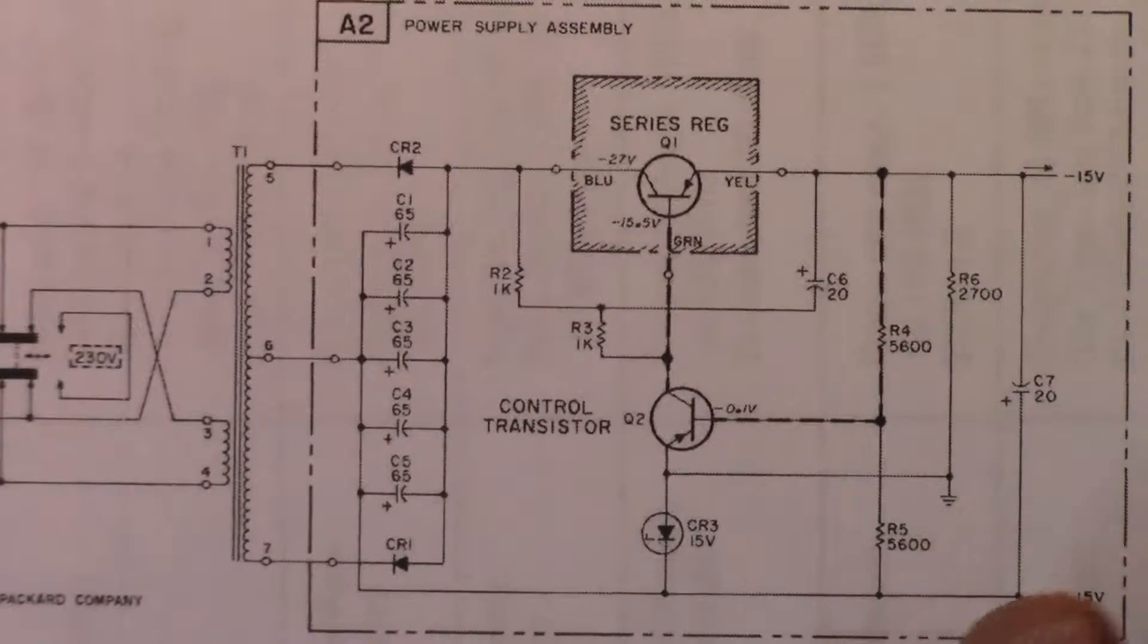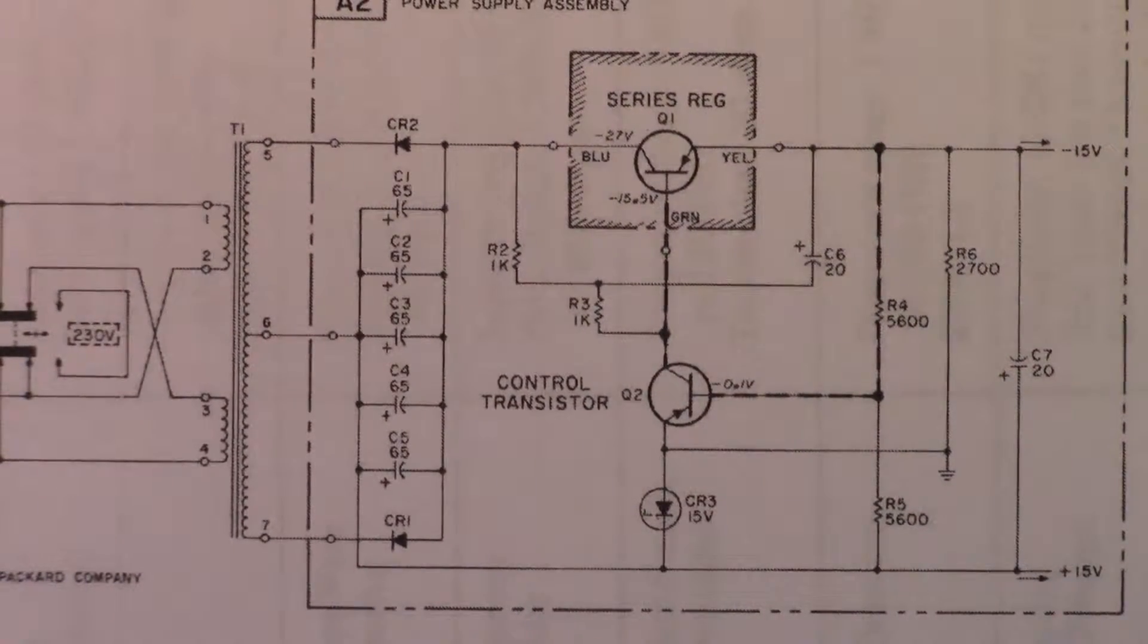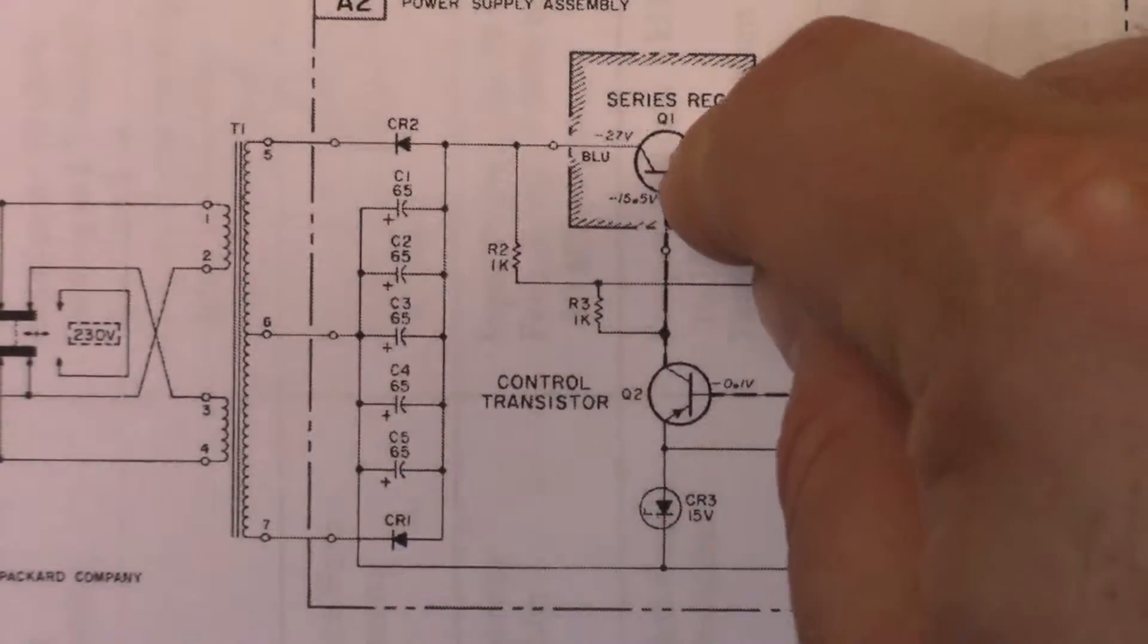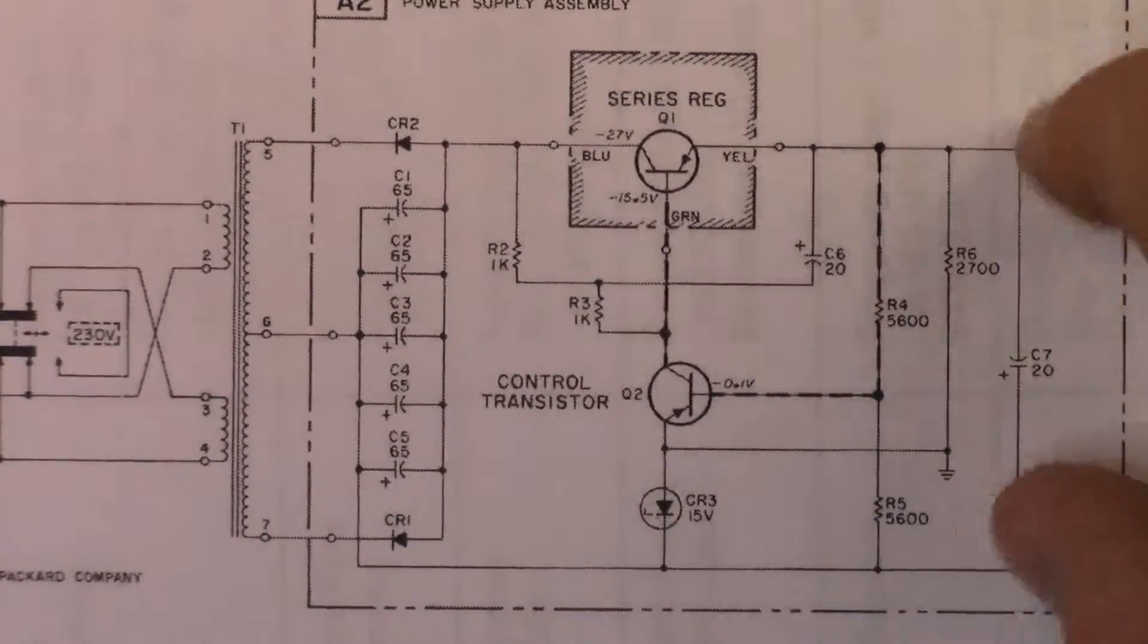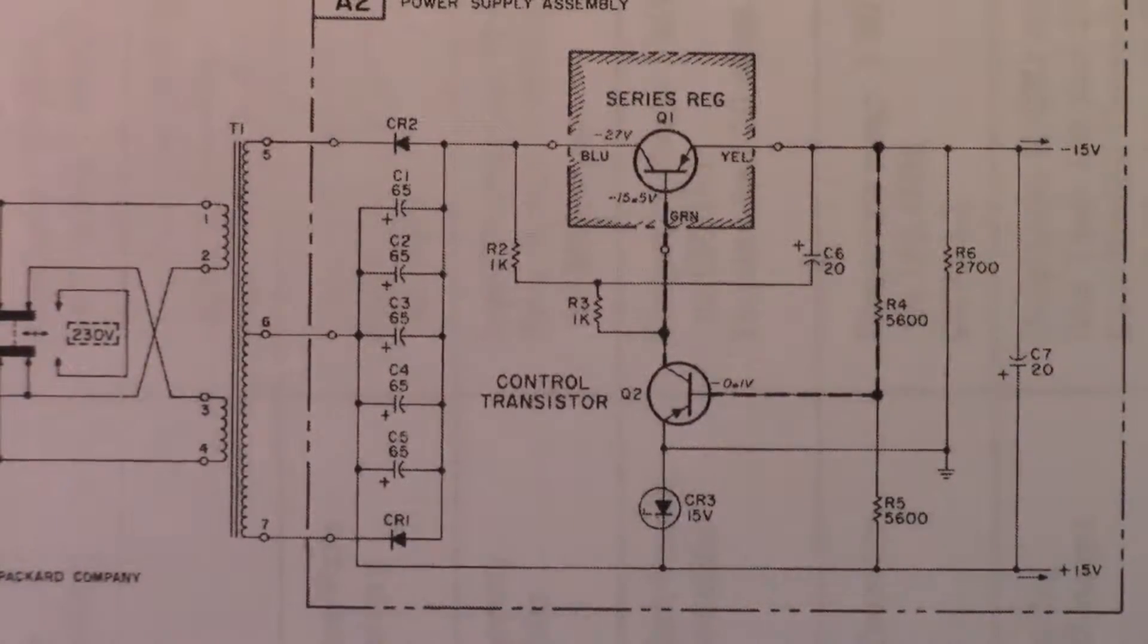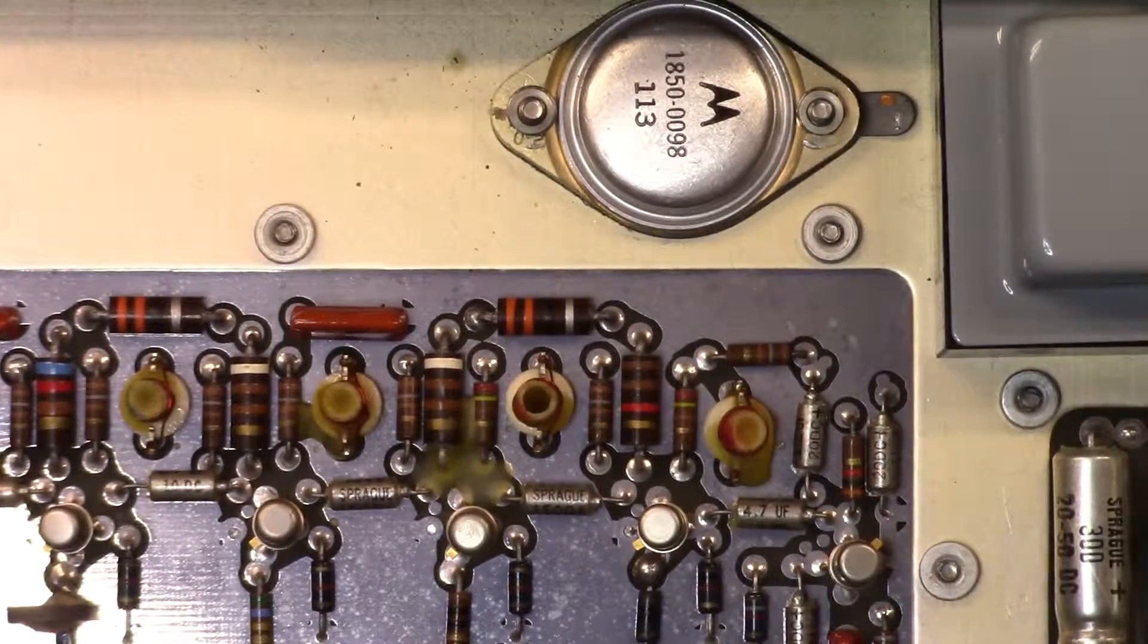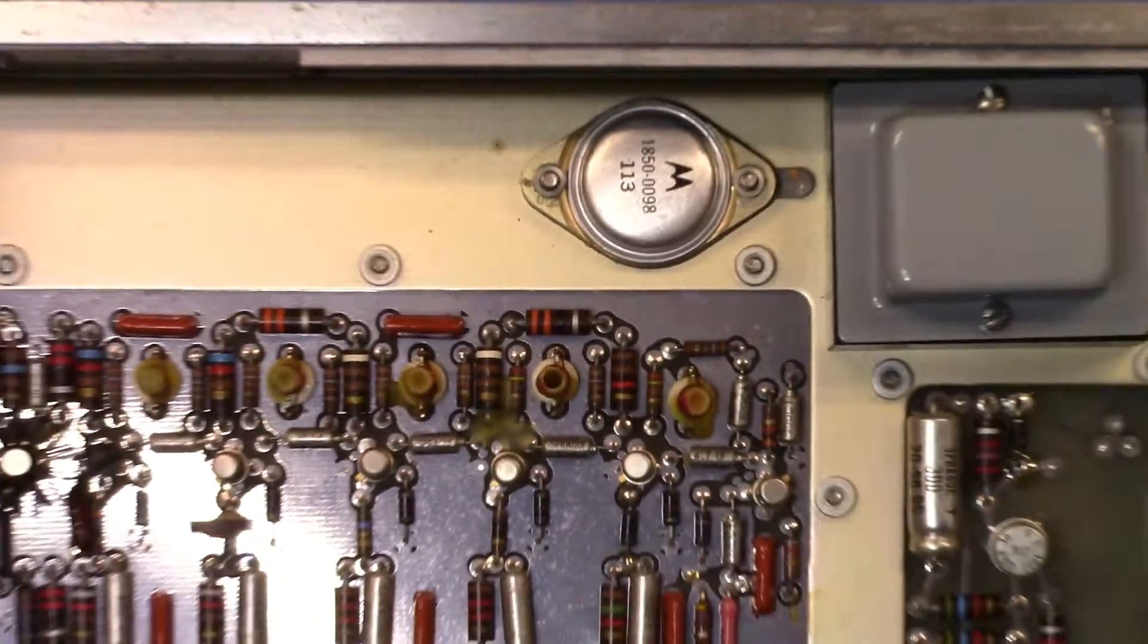You can see the power supply is over here, and this is the Zener diode that I blew up. This Zener diode sets a voltage reference. The control transistor then drives the series regulator to ensure that we get the proper voltage. Don't arc those components up; you'll blow that Zener diode apparently. So that's a quick look inside the unit. Let's reassemble it and then see it in action.